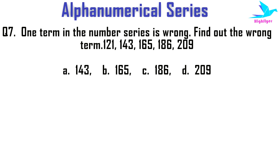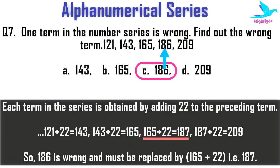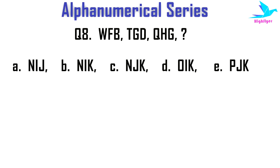Next example: in this type of question one term in the number series is wrong — we have to find the wrong term. The series is 121, 143, 165, 186, 209. The options are 143, 165, 186, or 209. The right option is C: 186. Each term is obtained by adding 22 to the preceding term: 121 + 22 = 143, 143 + 22 = 165, 165 + 22 = 187 — so the wrong number is clearly 186.